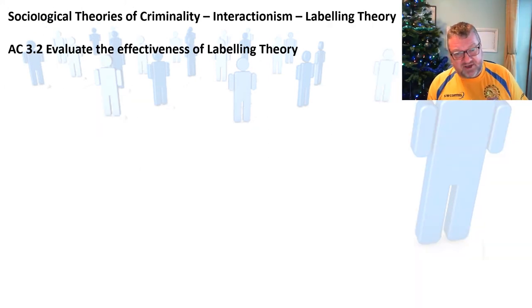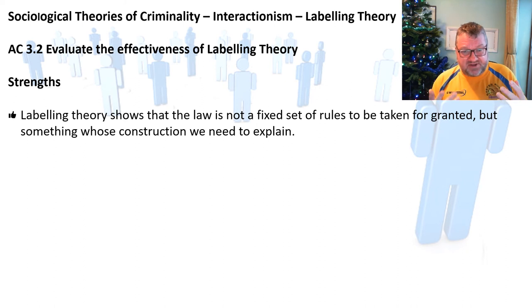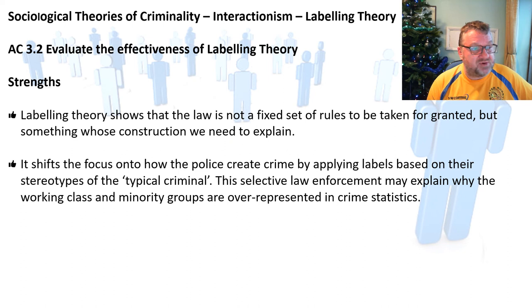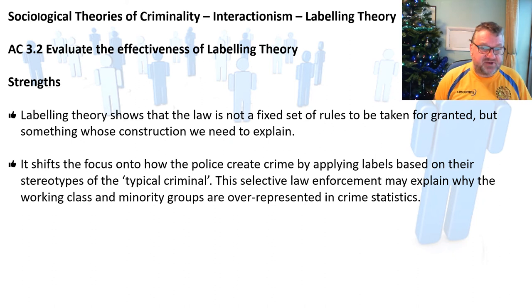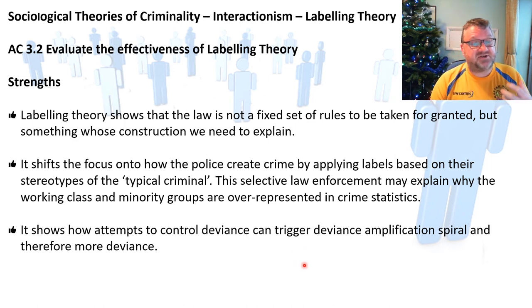Evaluating labelling theory — its strengths: it shows that the law is not a fixed set of rules to be taken for granted, but something whose construction we need to explain. It shifts the focus onto how the police create crime by applying labels based on their stereotypes of a typical criminal. This selective law enforcement may explain why working-class and minority groups are overrepresented in crime statistics, and it shows how attempts to control deviance can trigger the deviance amplification spiral.